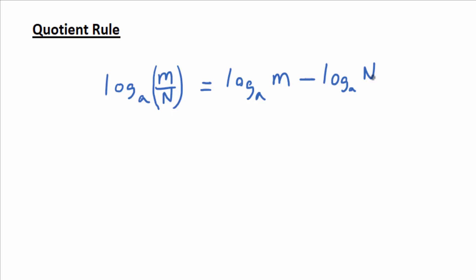Because remember, a product is associated with repeated addition, right? So product rule log base A of M times N equals log base A of M plus log base A of N.